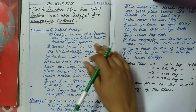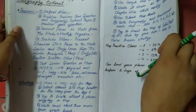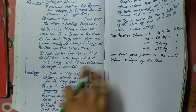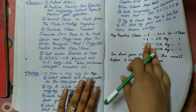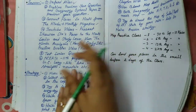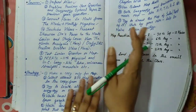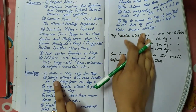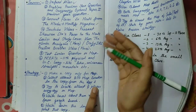Now coming to the strategy. Strategy number one: make a dedicated copy only for the map. Please make a separate copy just for map practice — not in your geography booklet or any other copy. Make one separately for your optional paper and one for prelims. Also, collect at least 500 map locations in this copy from day one.